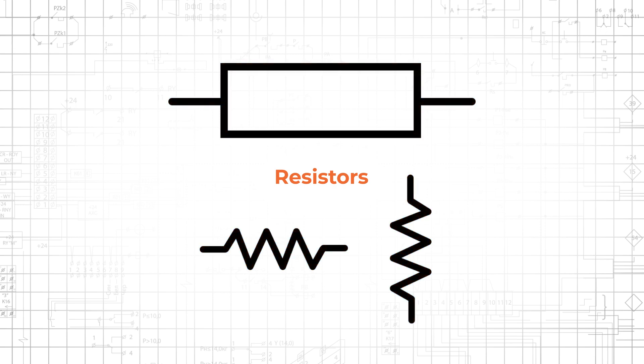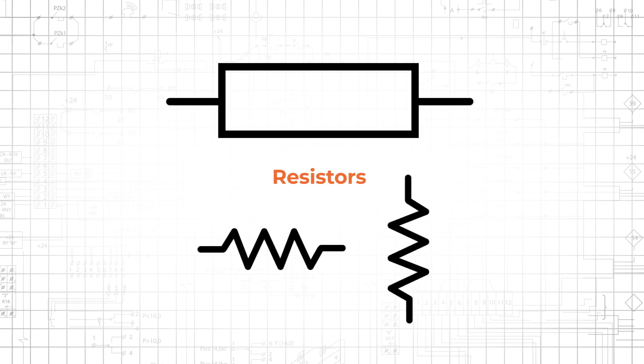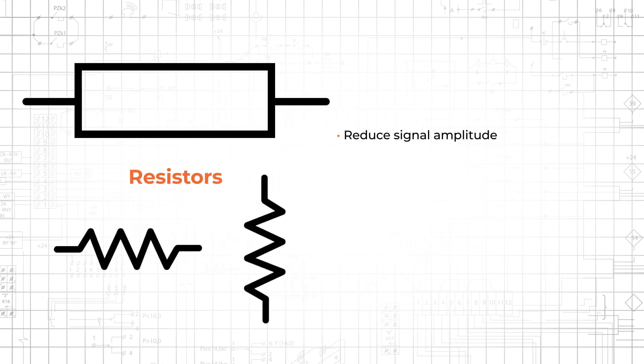However, resistance plays an essential role in circuit design and is used for such tasks as reducing the amplitude of a signal, establishing the gain of an amplifier circuit, limiting the current through a light-emitting diode, and creating frequency-dependent networks called filters.